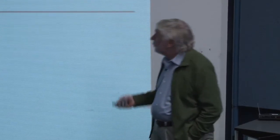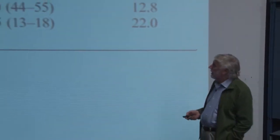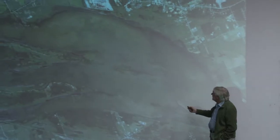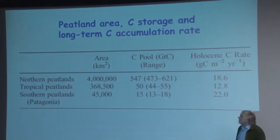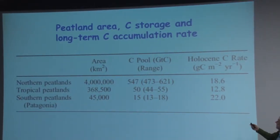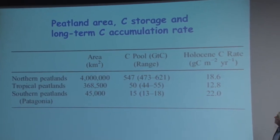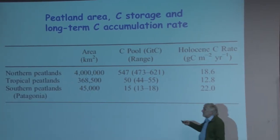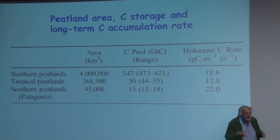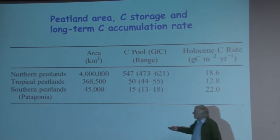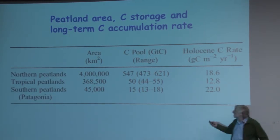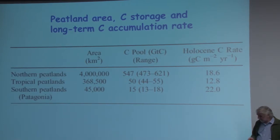This nitrogen may of course be released if these peatlands burn. Northern peatlands cover about 4 million square kilometers and contain about 500 gigatons of carbon, with a carbon accumulation rate over the Holocene of about 20 grams per square meter per year. Tropical peatlands are about one-tenth the size and gained about one-tenth the amount. There's a remarkable consistency — the same overall pattern of carbon accumulation occurs for southern peatlands such as Patagonia.